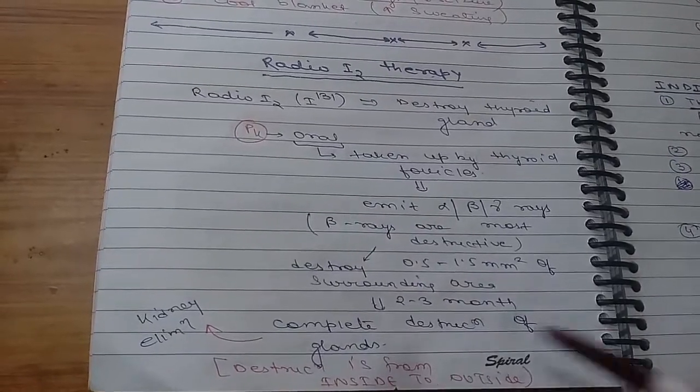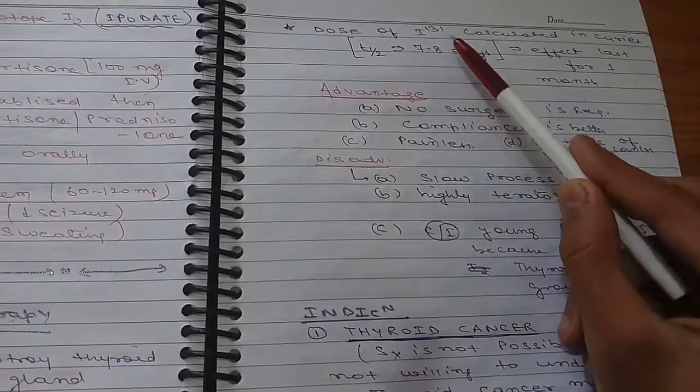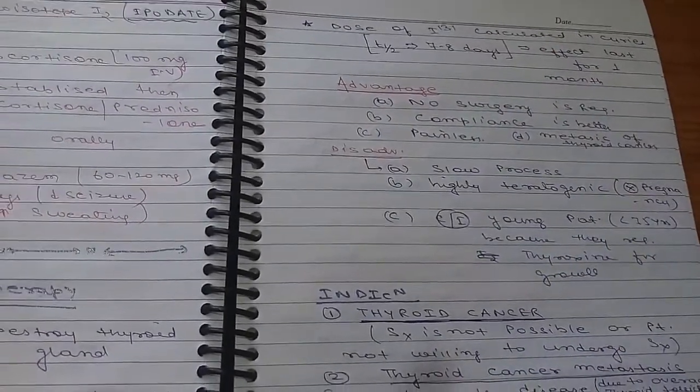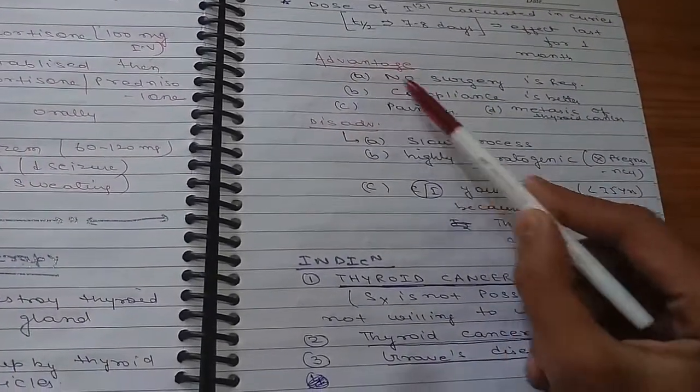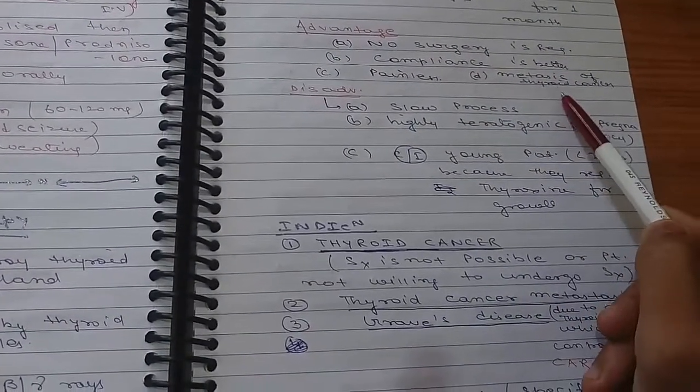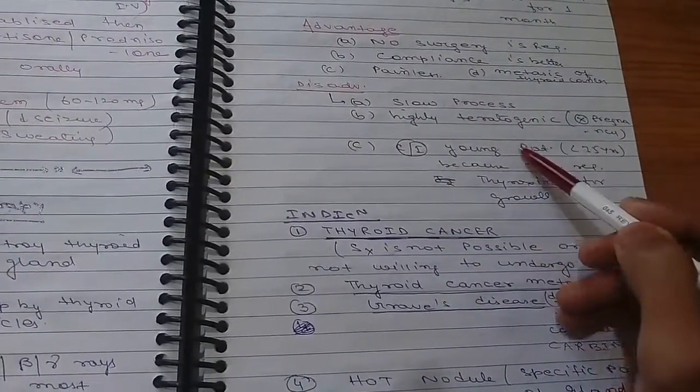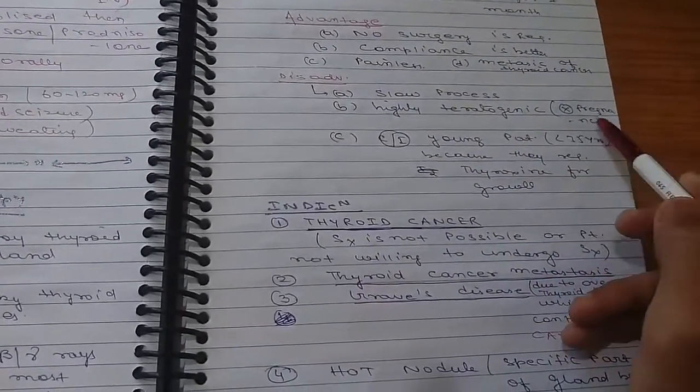After 2 to 3 months, there will be complete destruction of the gland and that will be eliminated by kidney. This destruction is from inside to outside. The dose of I-131 is calculated in curies. Advantages: no surgery is required, compliance is better, painless. Metastasis of thyroid cancer can also be prevented.